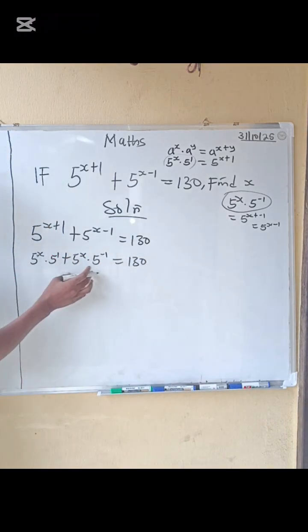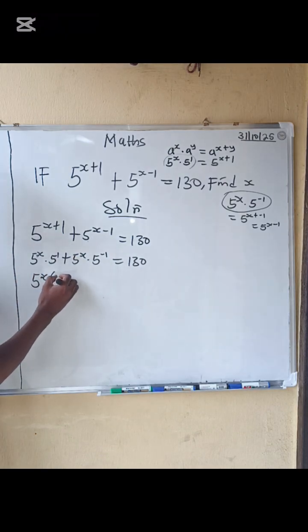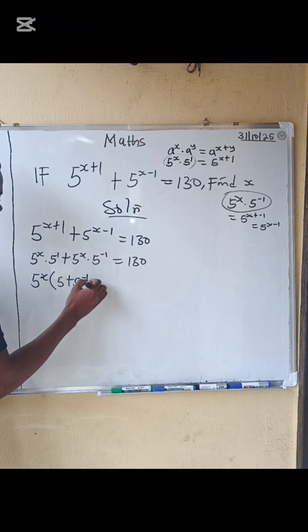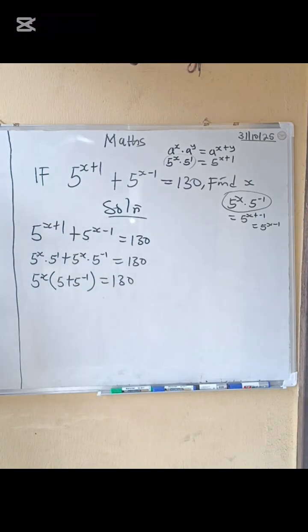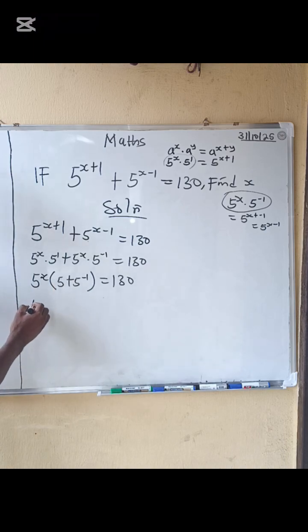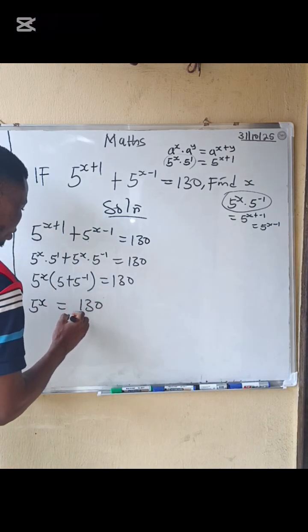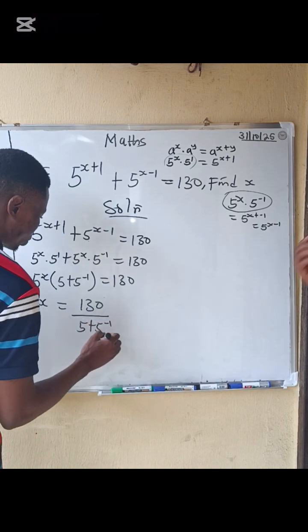What is common between them? Five to the x is common. Factor it out: five to the x times the quantity five plus five to the minus one, equals 180. So we divide both sides by five plus five to the minus one to isolate five to the x.